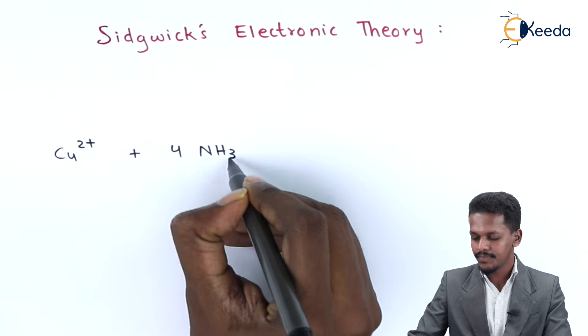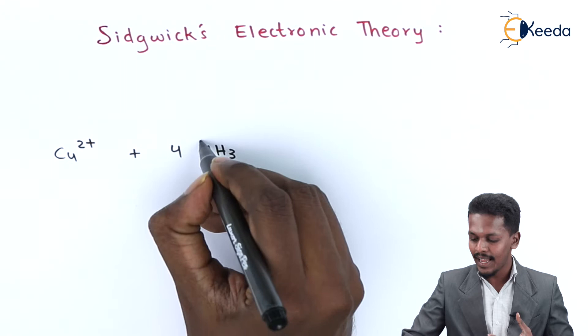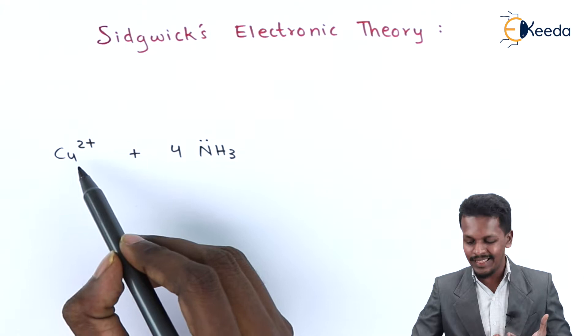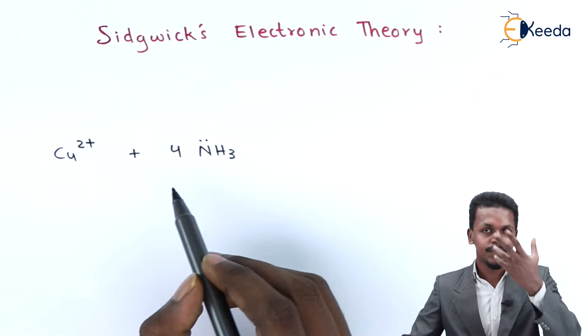When NH₃ forms a bond with the Cu²⁺ ion, it will donate its lone pair of electrons to the Cu²⁺ ion's vacant orbital. That is how the compound is formed.